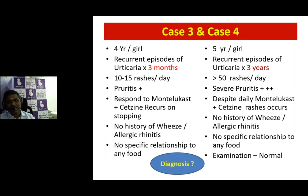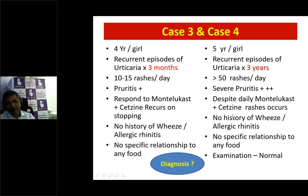Moving to cases three and four. On the left we have a four-year-old girl with recurrent urticaria for three months - more than six weeks - with 10 to 15 wheals per day responding to montelukast and cetirizine but relapsing when stopped. No history of wheeze, allergic rhinitis, or specific food relation. On the right, a similar age child has suffered rashes for almost three years, more than 50 wheals per day with severe pruritus, requiring daily montelukast and cetirizine. What are the diagnoses?